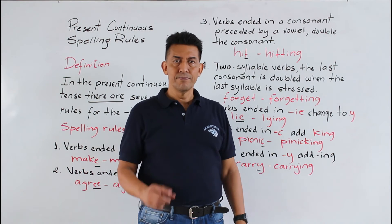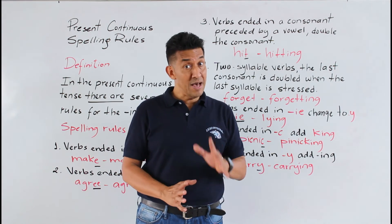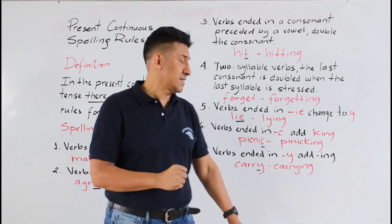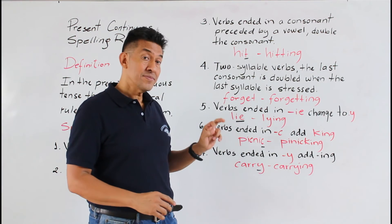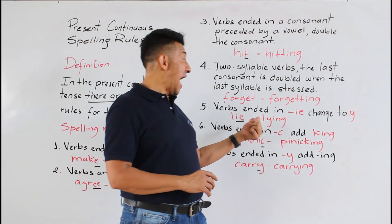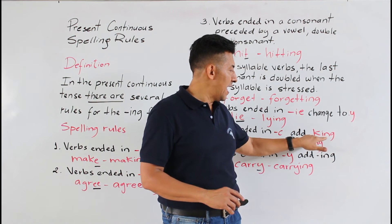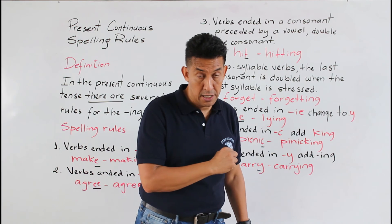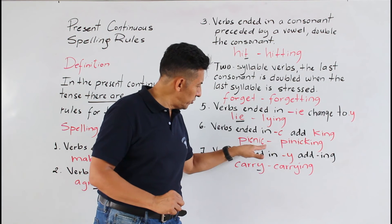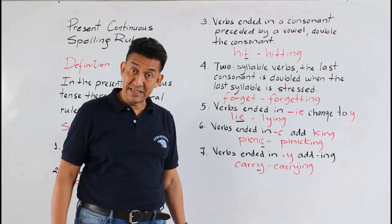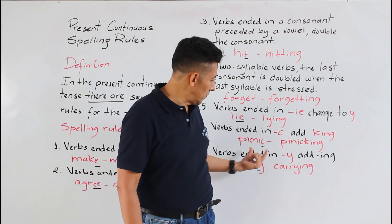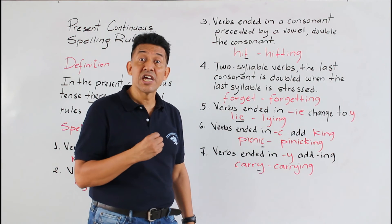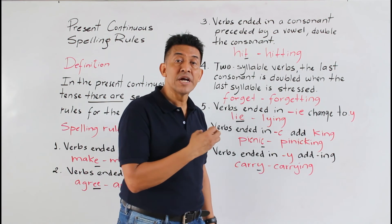Difícil de recordar, pero si me las aprendo no va a tener problema. Vamos a la rule number six: verbs ending in letter C — you add K before ING, in other words you add 'K-I-N-G'. The example is 'picnic'. Look — the verb ends in the letter C, entonces lo que tengo que hacer es escribo la palabra igual: picnic, y le agrego K más ING: picnicking.